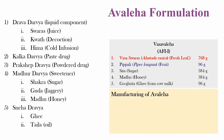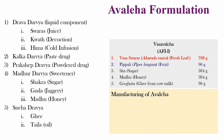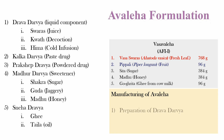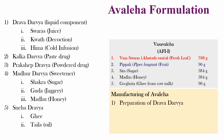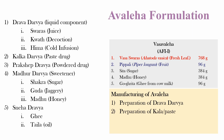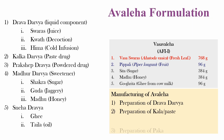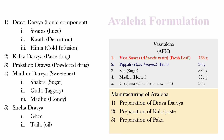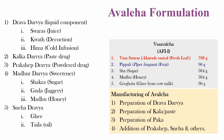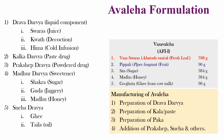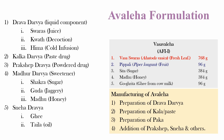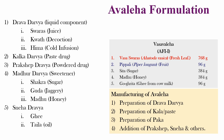The manufacturing of an Avaleha formulation includes four major steps: preparation of Dravya Dravya, preparation of Kalka or paste, preparation of Paaka, and then addition of Prakshepa Dravya, Sneha Dravya and other components to Paaka to obtain Avaleha.